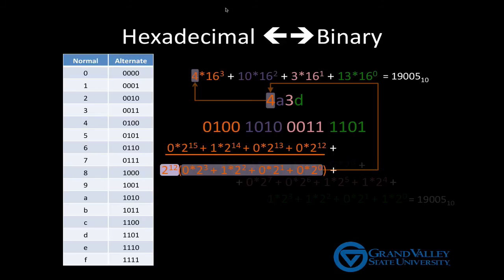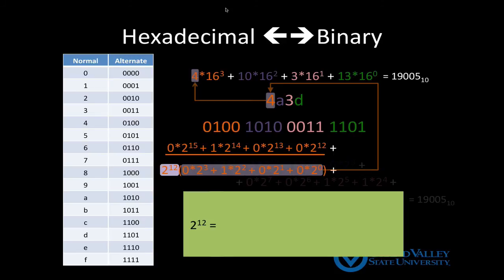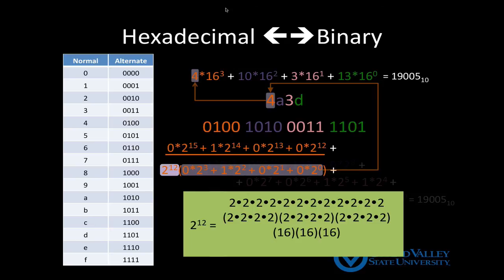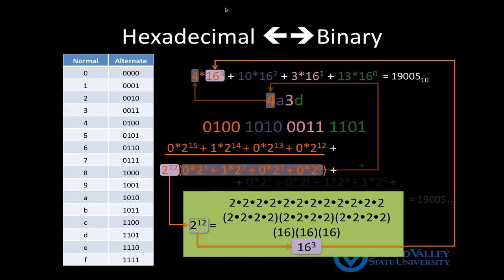Now, what about the 2 to the 12 that we just factored out? Well, 2 to the 12 is 2 multiplied by itself 12 times. Let's associate those 12 2s in groups of 4, or in other words, 3 16s, which we write as 16 cubed. This 16 cubed is not coincidentally the place value for the corresponding hexadecimal digit.